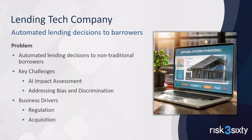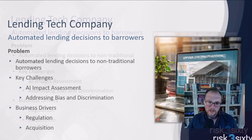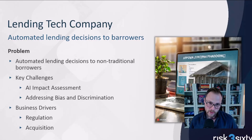For this first example, I want to talk about a lending tech company. This company has a process using AI and machine learning to automate lending decisions to borrowers. They lend to non-traditional borrowers — typically entrepreneurs, people with bad credit or low credit but really good cash flow.